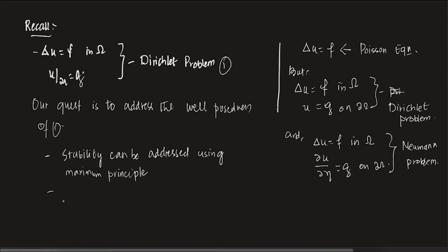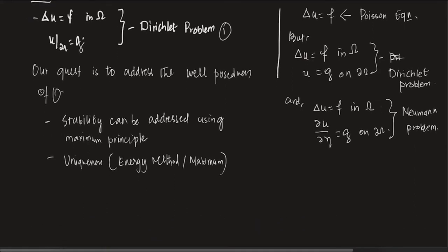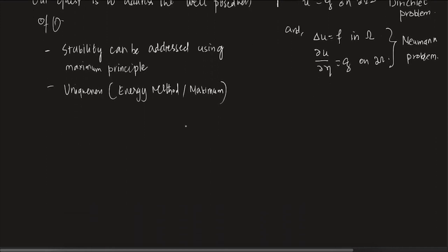The only remaining and most important thing is: how do I find a solution for this problem? The question is now the existence of: minus Laplacian of U equals to F in omega, and U restricted to the boundary is G. For our case, we assume F and G are smooth.